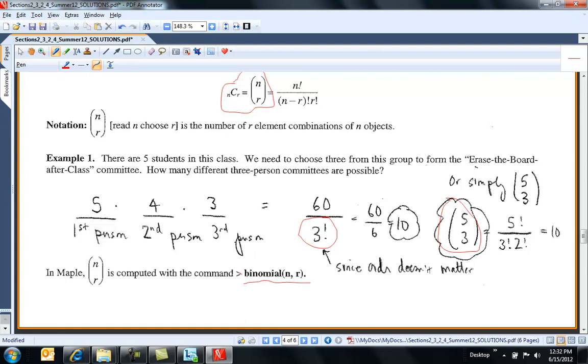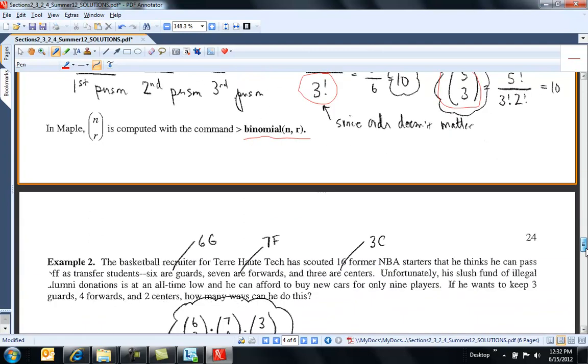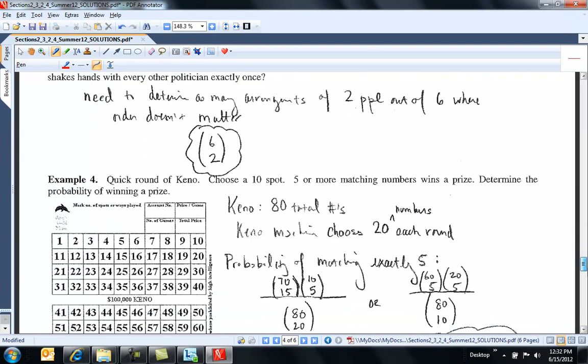Also very nice in Maple. I use this a lot. If you just, after the prompt, type in binomial like eight choose three, it will tell you the value. So this was nice, a lot of combinations.